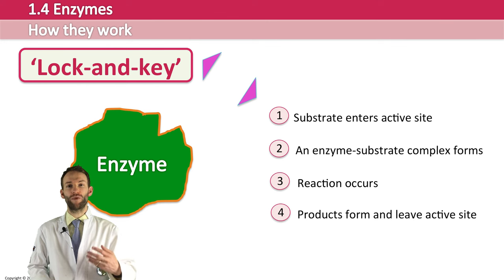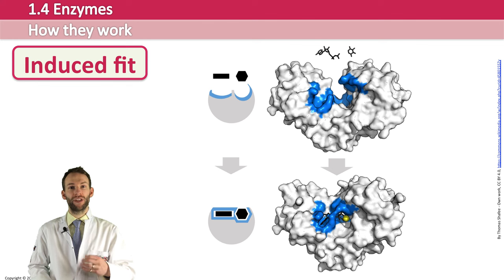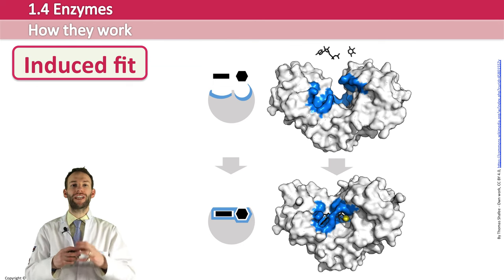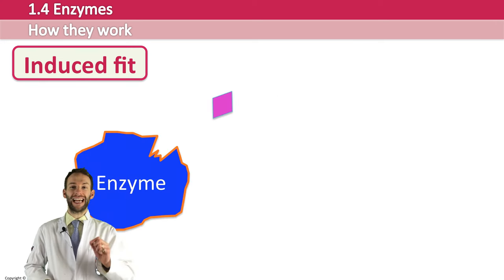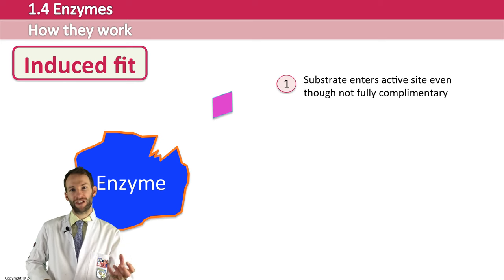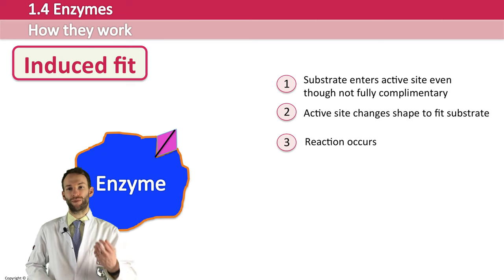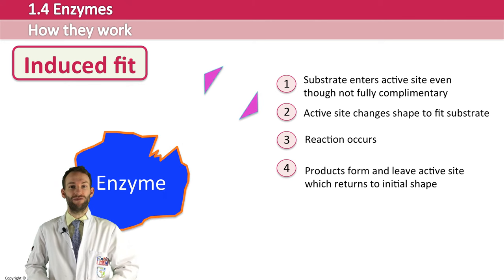In the induced fit model, it's more likely that the active site is not a rigid shape but a more flexible one. Once the substrate enters the active site, the enzyme molds around it — it's not a perfect shape to begin with. Due to X-ray crystallography, this model has gained much more credibility in recent years. The enzyme and substrate are not a perfect match initially, but as the substrate moves in, the active site molds around it, the reaction occurs, the products leave, and the active site returns to its original shape.